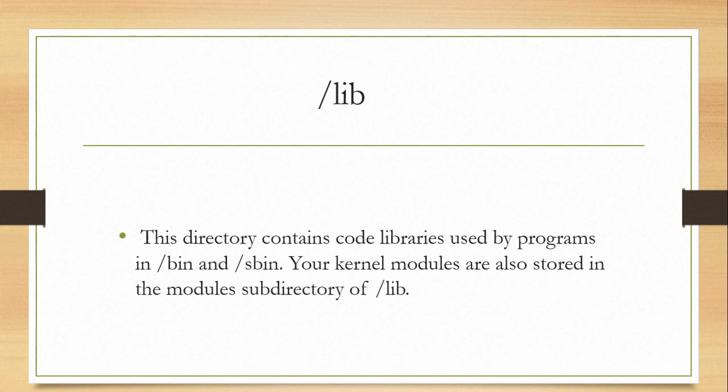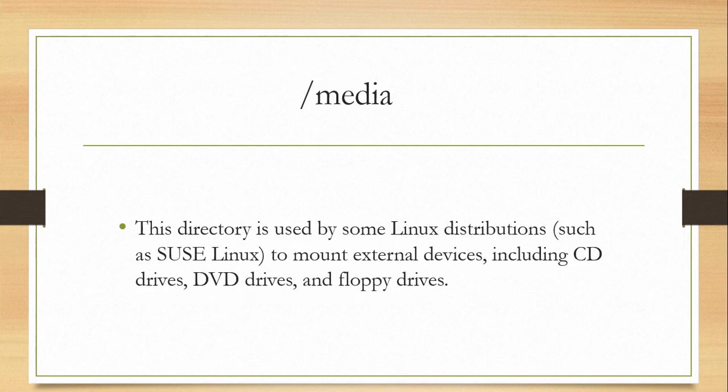Next we have the lib directory. This directory contains the libraries of the executables that are placed in the bin directory. The executable files of programs in bin and sbin use some libraries, and those libraries are placed in the slash lib directory.